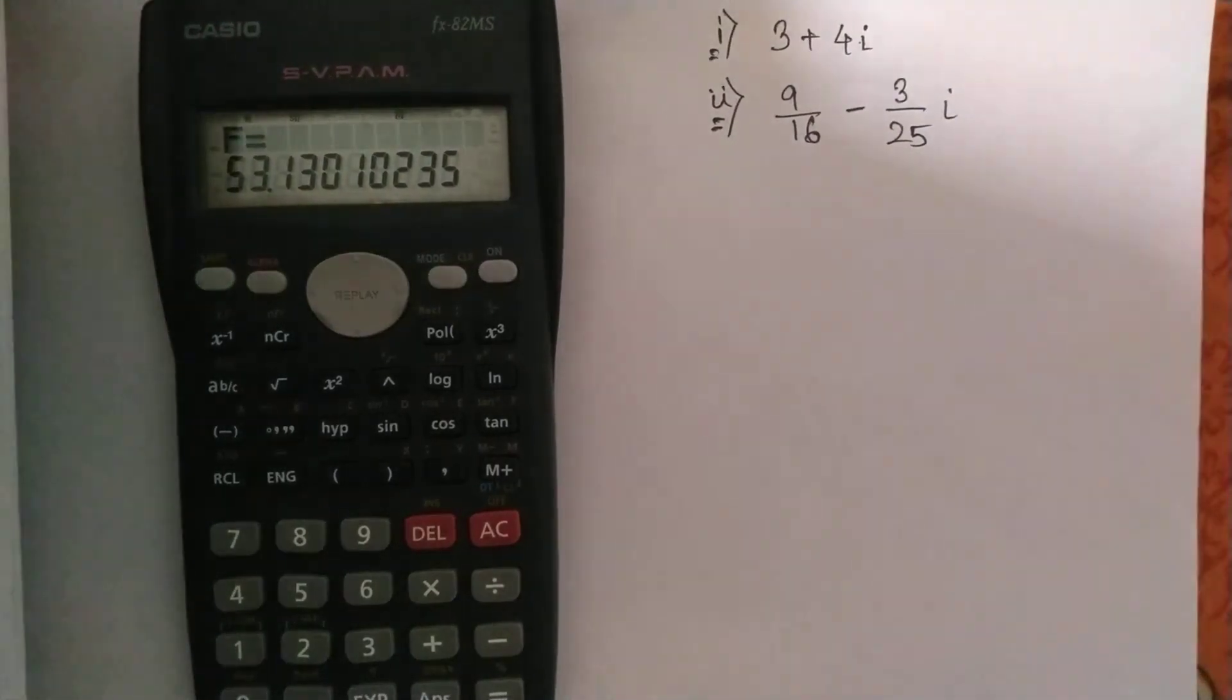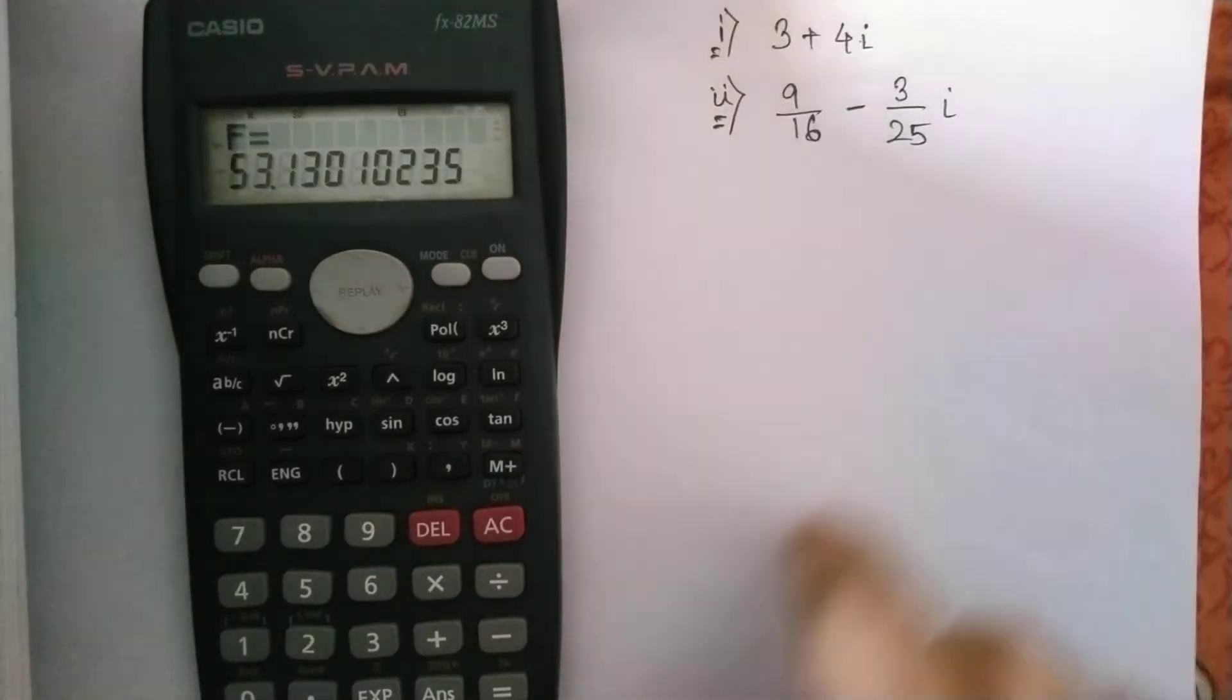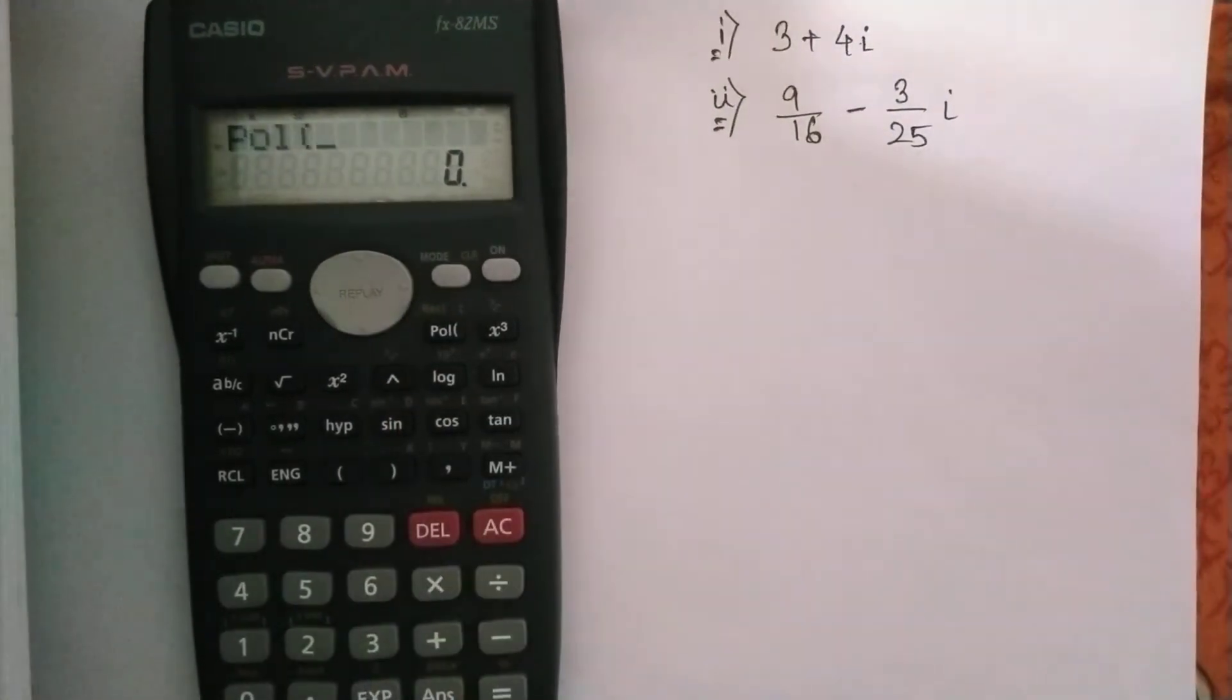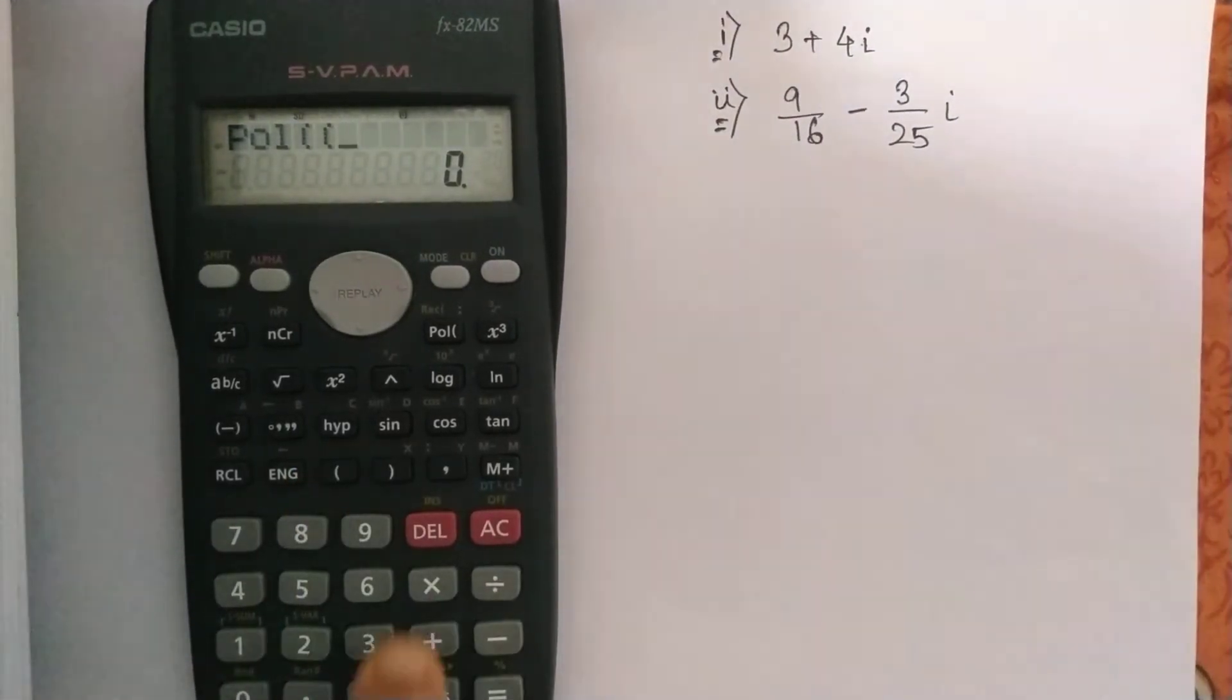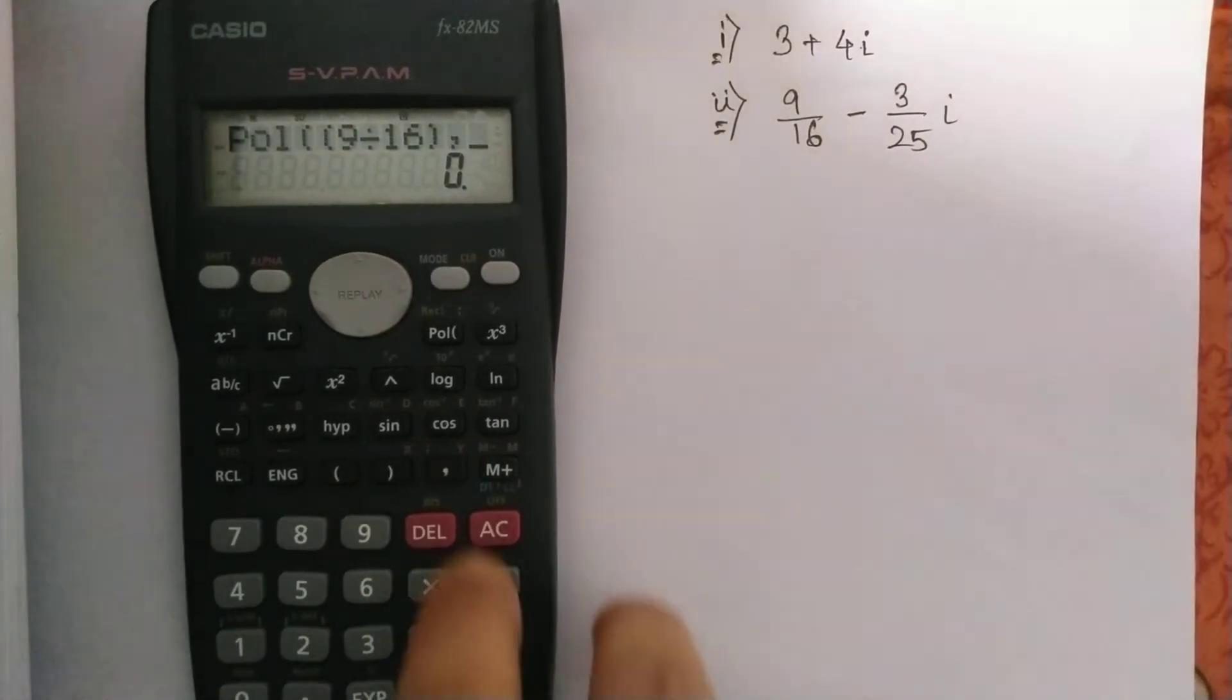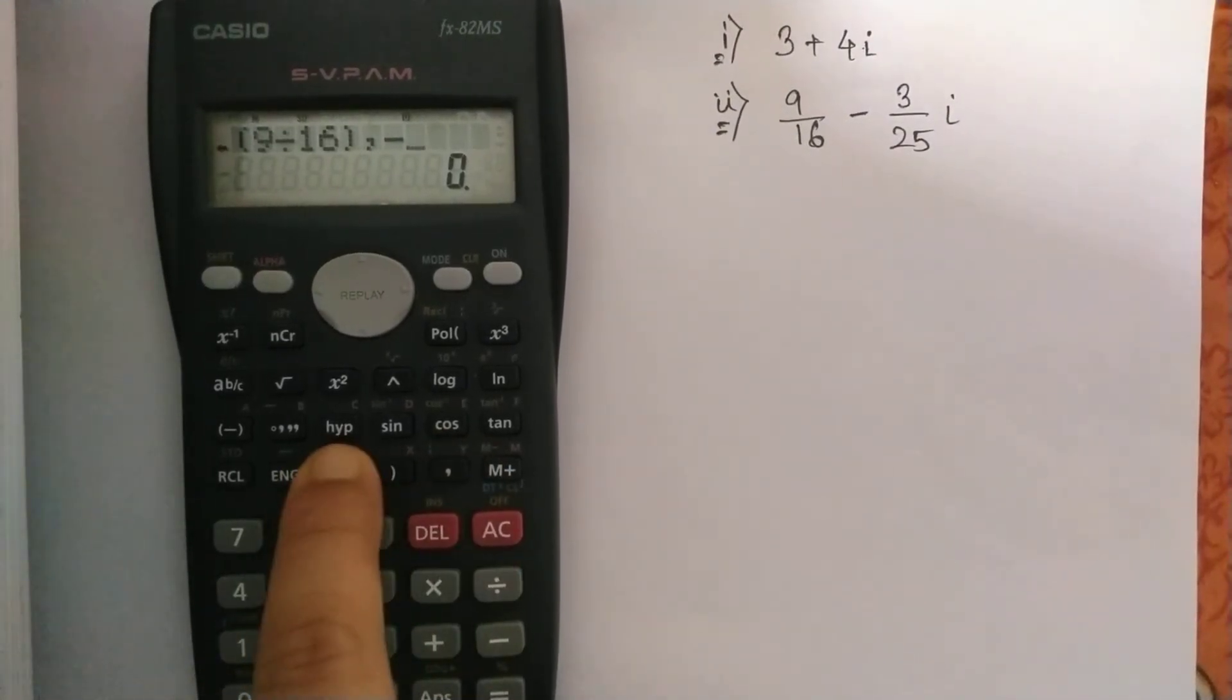Again, if we try for the next one, let us do it again. So polar. Now here we have fractions, so we have to include another bracket. First, the real part: 9 divided by 16. And now the imaginary part with comma, negative 3 by 25, so 3 divided by 25.